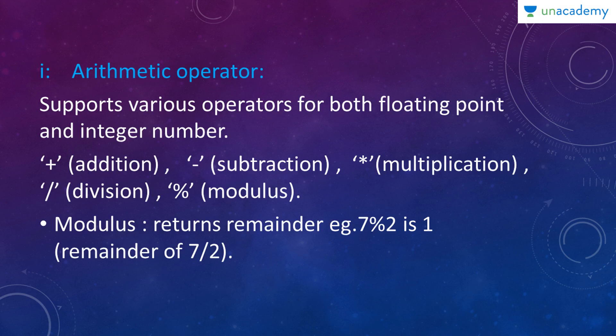First, arithmetic operator supports various operators for both floating point and integer number. Few arithmetic operators are addition which is a plus sign, subtraction which is a minus sign, multiplication which is an asterisk, division and modulus. Something new is modulus. Let us see what is modulus. Modulus returns remainder. Example, if you have 7 mod 2 the remainder is 1. Hence, 7 mod 2 the answer will be 1. That is a modulus operator.